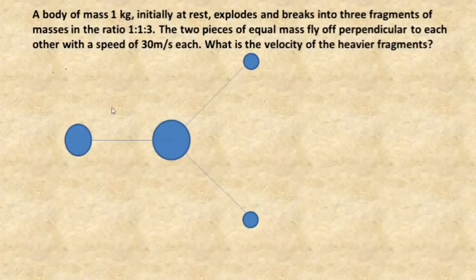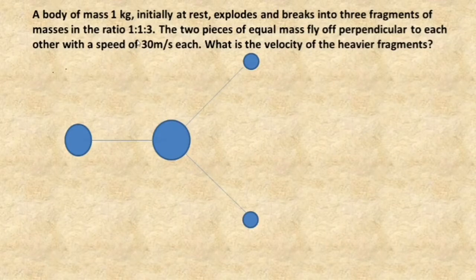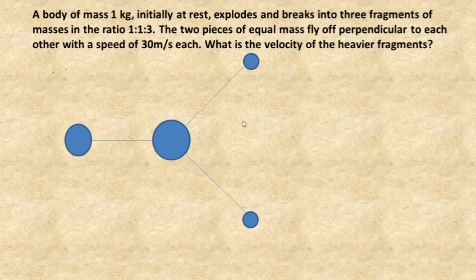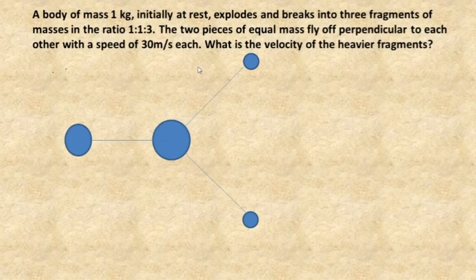Let's do this problem. A body of mass one kilogram initially at rest explodes and breaks into three fragments of masses in the ratio 1:1:3. As you can see in the picture, it explodes into three fragments in that ratio. The two pieces of equal mass fly off perpendicular to each other with a speed of 30 meters per second each. What is the velocity of the heavier fragment?